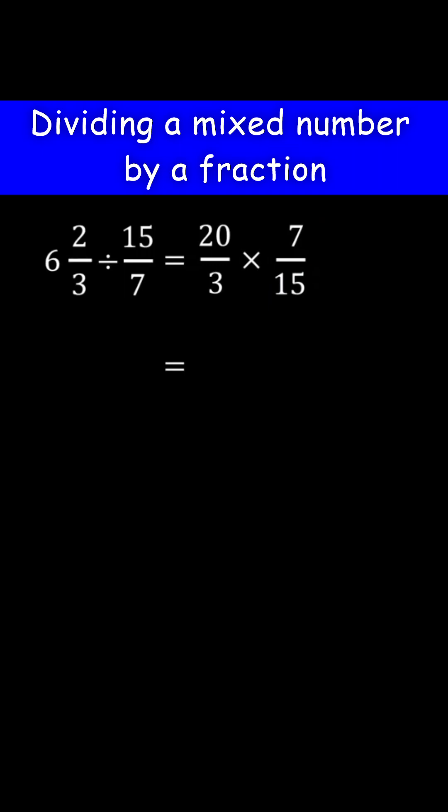Now before you multiply, simplify if possible using cancellation. 20 can be factored as 4 times 5. 3 and 7 are prime numbers, so they cannot be factored. 15 can be factored as 3 times 5. We can cancel the 5.